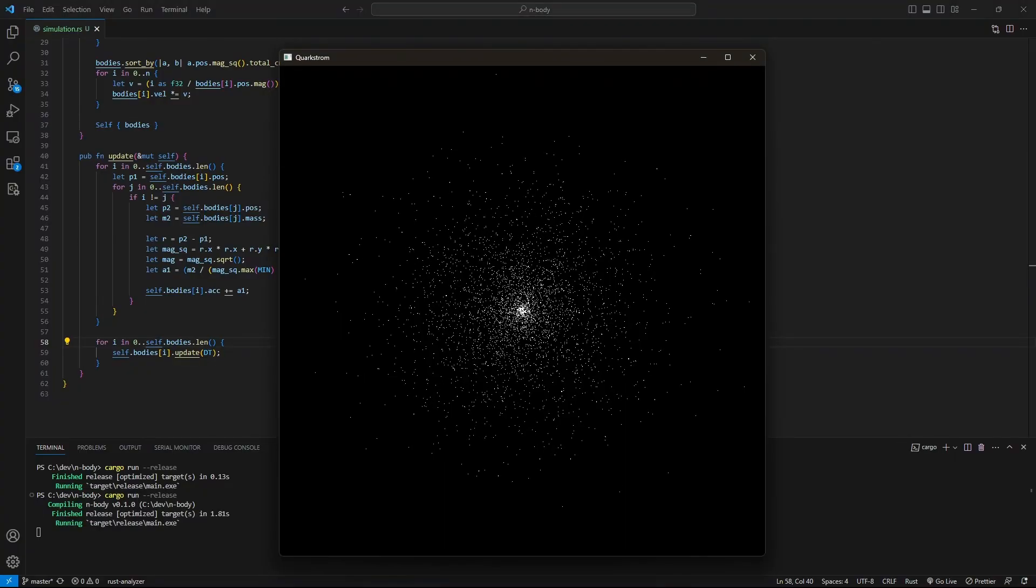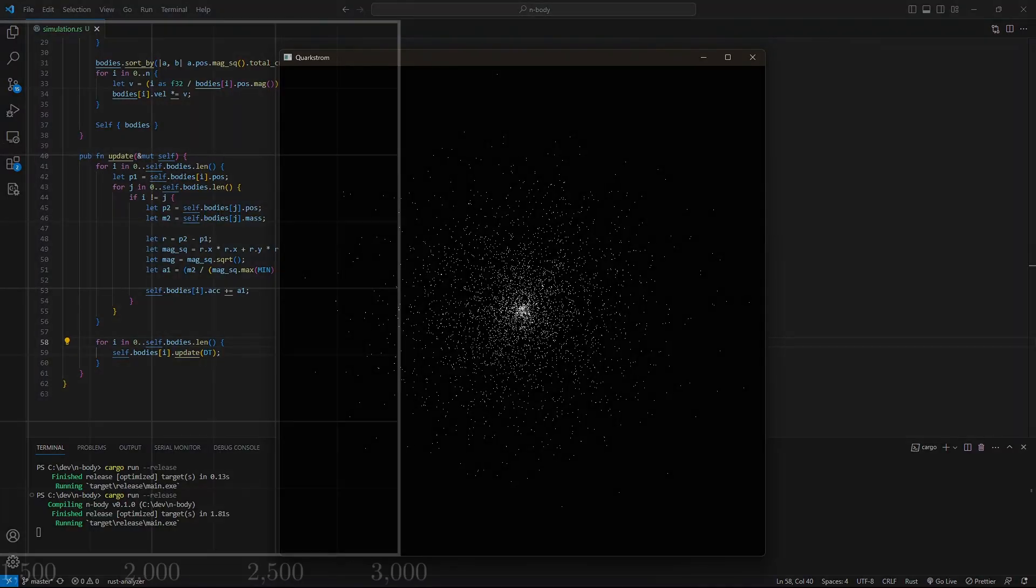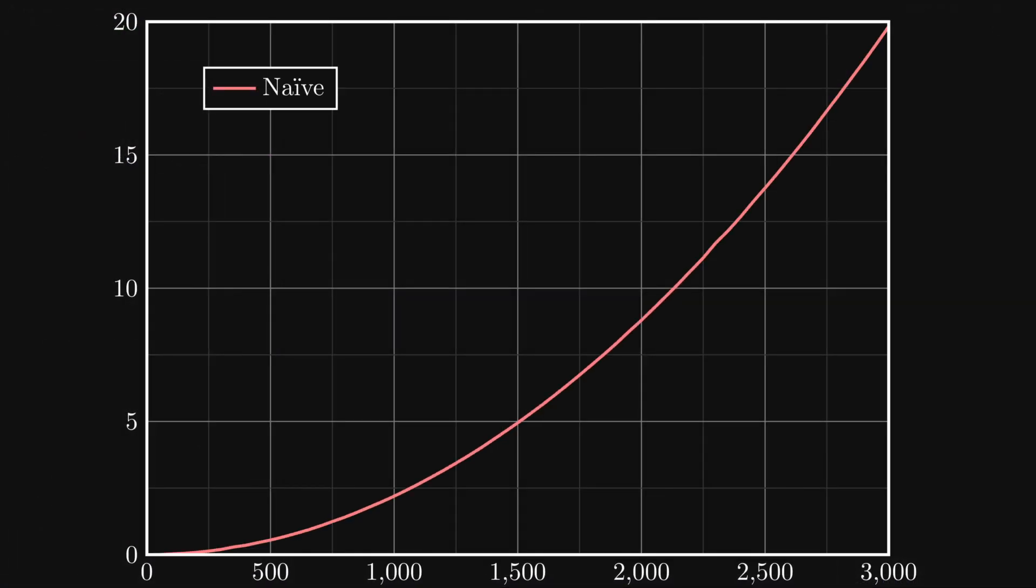But it isn't very fast. To show this better, I made this graph. On the horizontal axis is the amount of bodies n, and on the vertical axis is the amount of time in milliseconds that an update with that amount of bodies takes on average.